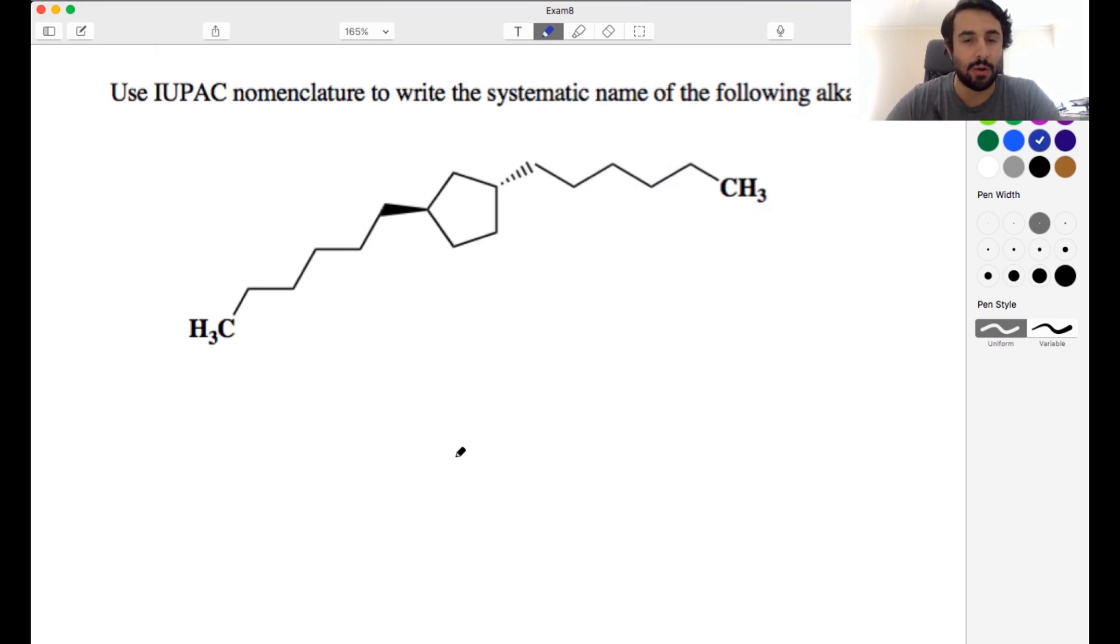Okay, let's try another organic chemistry practice exam. So the first one, use IUPAC nomenclature to write the systematic name of the following alkanes. We need to name this thing, and we have a cyclic molecule. This looks like a long linear molecule, but look at this. We got a five-membered ring. So this is actually the parent chain here, and these are substituents.